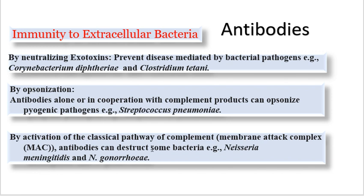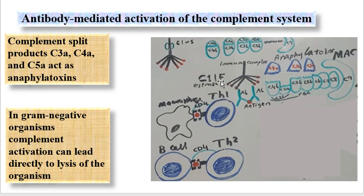Activation of the complement system results in elimination of some bacteria, for example Neisseria meningitidis and Neisseria gonorrhoeae. This is the example of antibodies that mediate activation of the complement system. Antibodies raised against bacteria bind to their specific bacteria, and binding of antibodies to the bacteria leads to formation of what is called an immune complex. Formation of the immune complex activates the classical pathway of the complement.